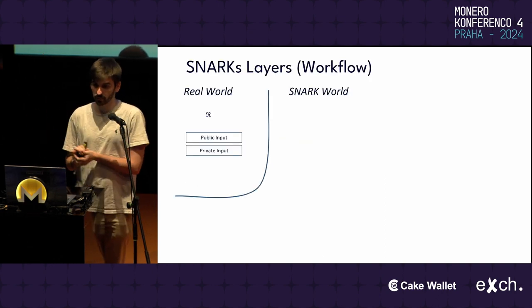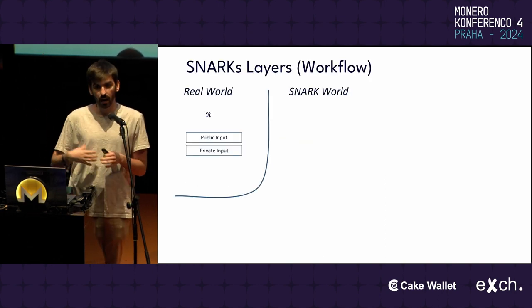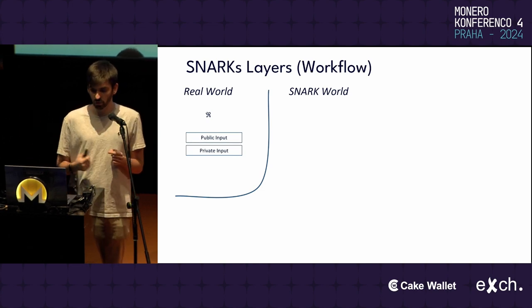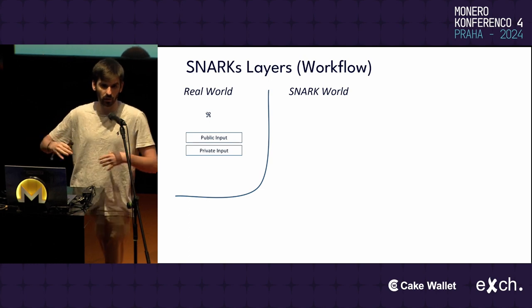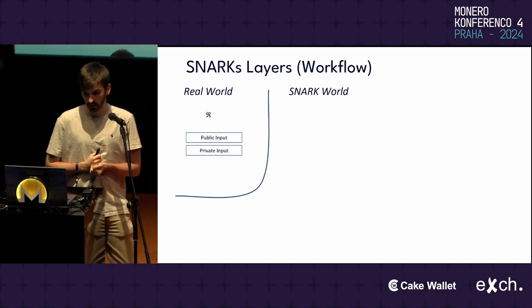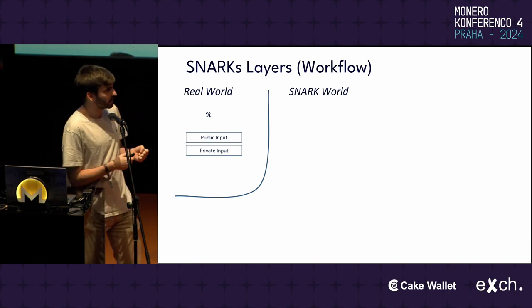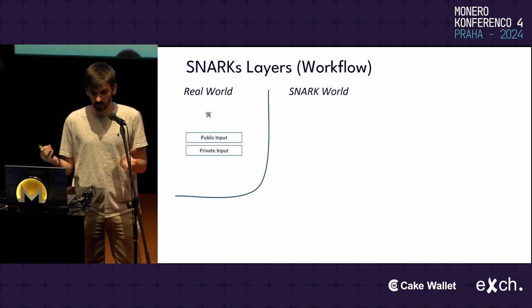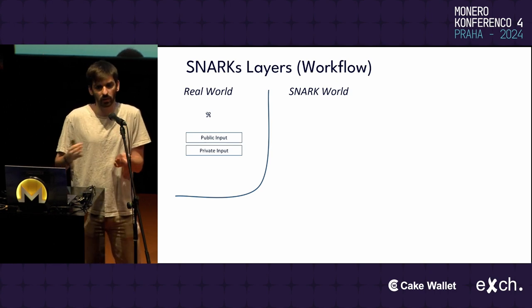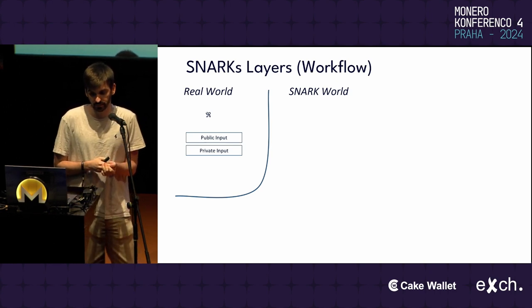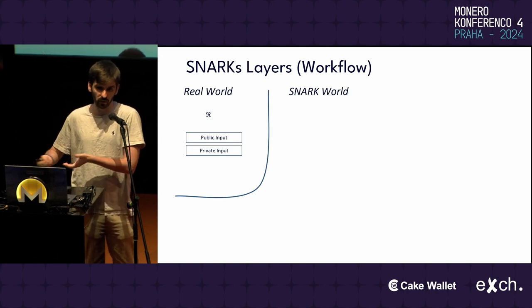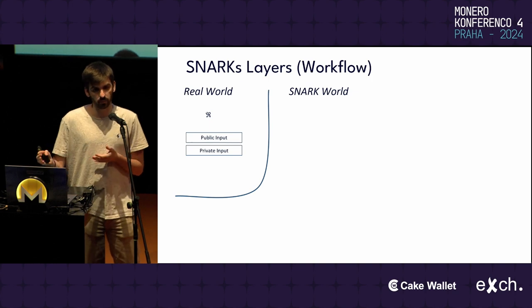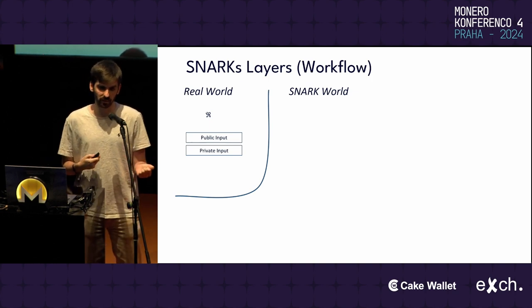The first part is to understand how systems use SNARKs and zero-knowledge proofs. SNARKs are basically the most common zero-knowledge proofs used in practice today. We start with a program — here we call it R — that describes what we want to prove: the computation we want to prove to some verifier. That program takes some public inputs and some private inputs.